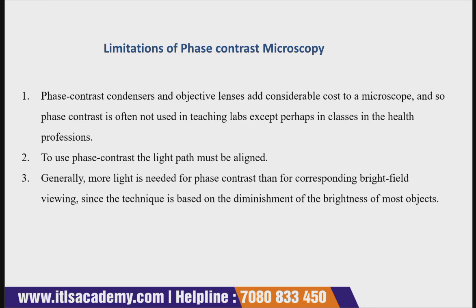The limitations of phase contrast microscopy are: phase contrast condensers and objective lenses add considerable cost to the microscope, so it is often not used in teaching labs except in health profession classes; the light path must be aligned for phase contrast, which is another limitation; and generally more light is needed for phase contrast than for corresponding bright-field viewing, since the technique is based on discrimination of brightness differences of objects.